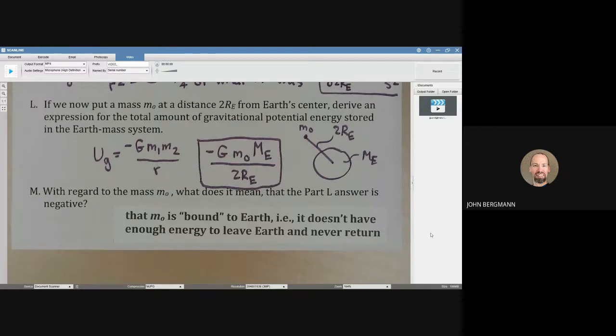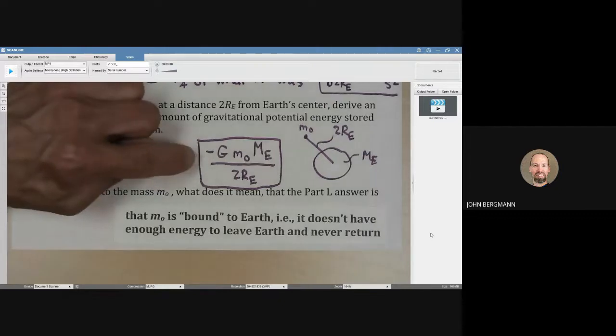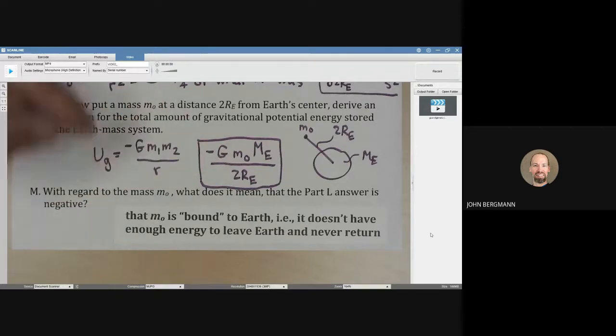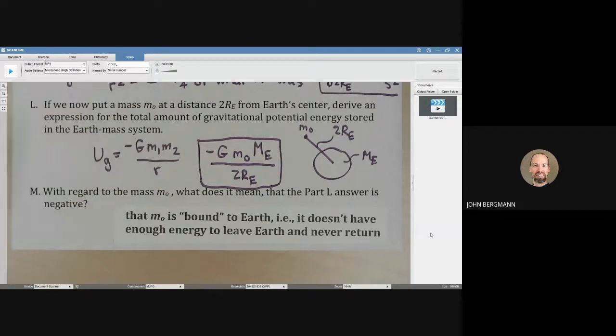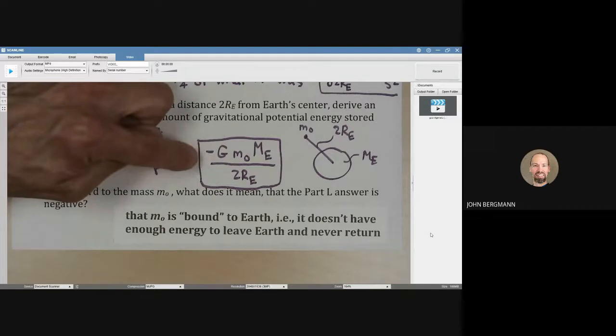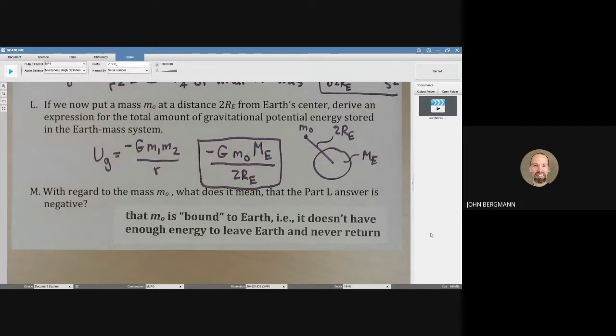In order for it not to be bound, it has to be moving fast enough - that is, to have a positive kinetic energy that overcomes this negative value here, that is greater in magnitude or at least equal to this negative value. But as long as that value is negative and the kinetic energy isn't positive enough to overcome that, we say that a mass is bound to another celestial object.